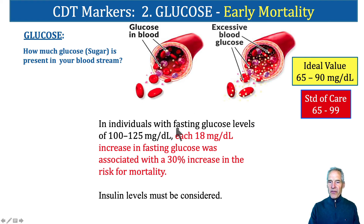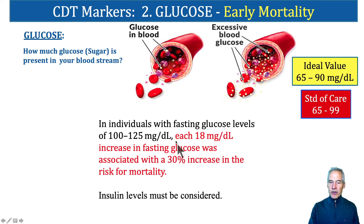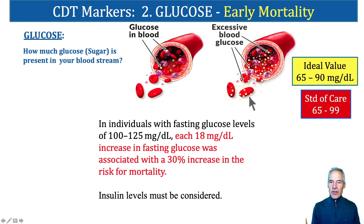Individuals with fasting glucose levels of 100 to 125 — very common in America and Western civilization — show that for each 18 milligrams per deciliter increase in fasting glucose, there was a 30% increase in the risk for mortality. So clearly at 100, we're in a risk regime. Our ideal range is 65 to 90, whereas the standard of care says 65 to 99. Going from 90 to 99, mortality will increase a little bit, and diseases involving lots of blood flow, like Alzheimer's in the brain, will see an uptick. But in any case, we always need to consider our insulin levels.